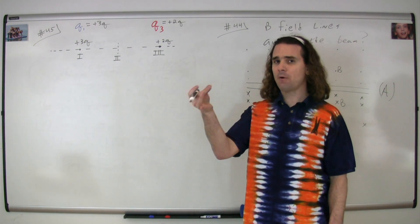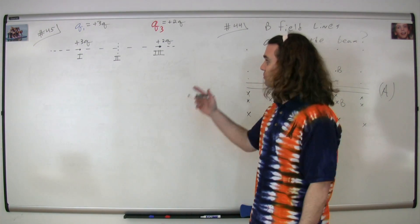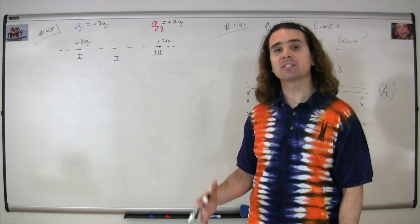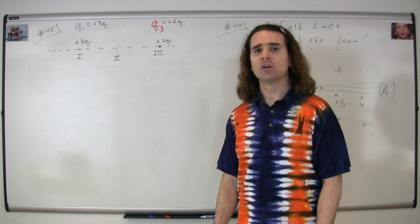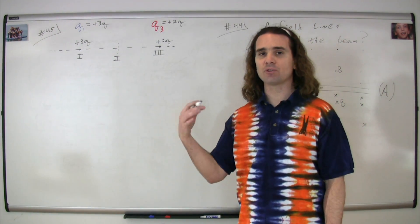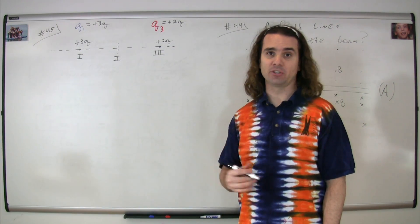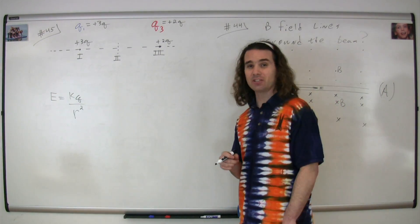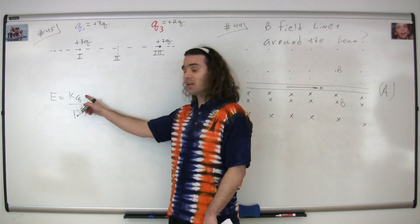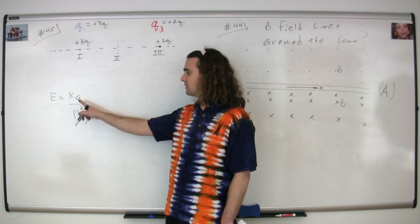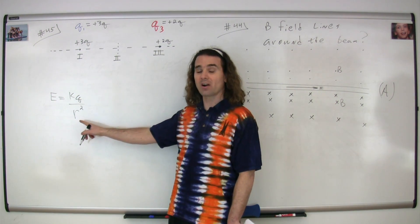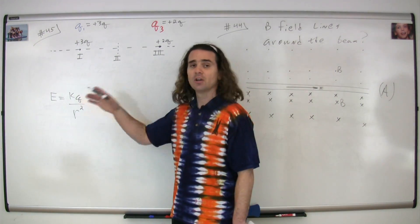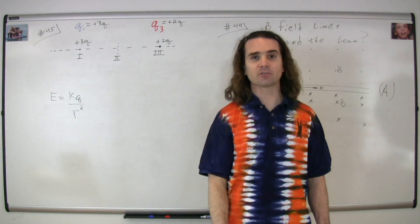It's basically like asking: if I take a small positive test charge and place it along this line, where will it have a net force acting on it of zero? We start with the equation for the electric field caused by a point charge. The electric field caused by a point charge is equal to Coulomb's constant times q, the charge causing the electric field, divided by r squared, where r is the distance from the center of the charge to the point we're evaluating.